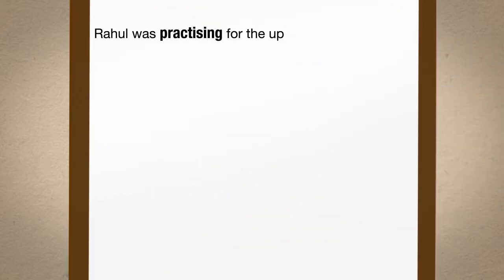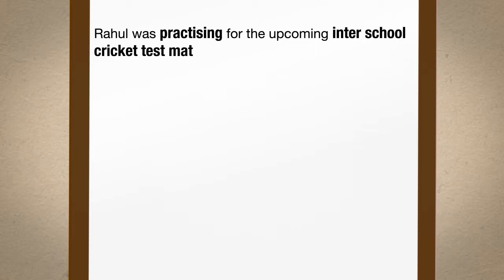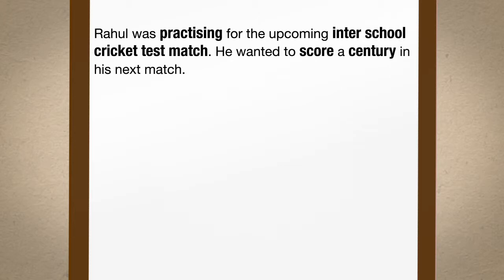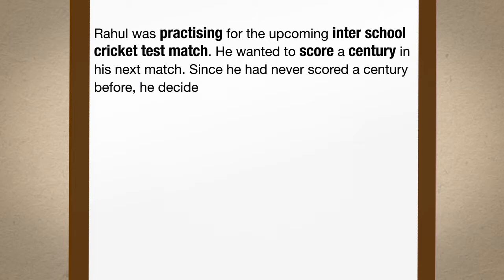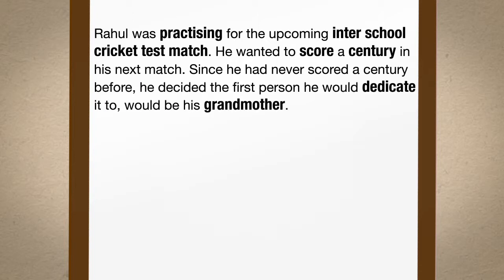Rahul was practicing for the upcoming inter-school cricket test match. He wanted to score a century in his next match. Since he had never scored a century before, he decided the first person he would dedicate it to would be his grandmother. What can you infer from this passage?